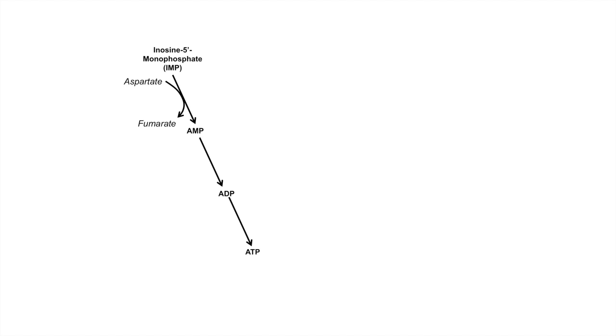Once you have IMP, it can be processed into AMP utilizing the amino acid aspartate. An easy way to remember that is IMP to AMP — aspartate starts with an A, and AMP starts with an A. So IMP to AMP requires the aspartate amino acid. Then AMP can be processed to ADP, which can then be processed to ATP.